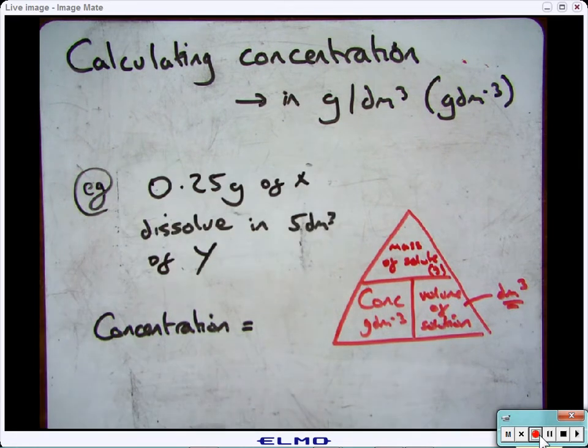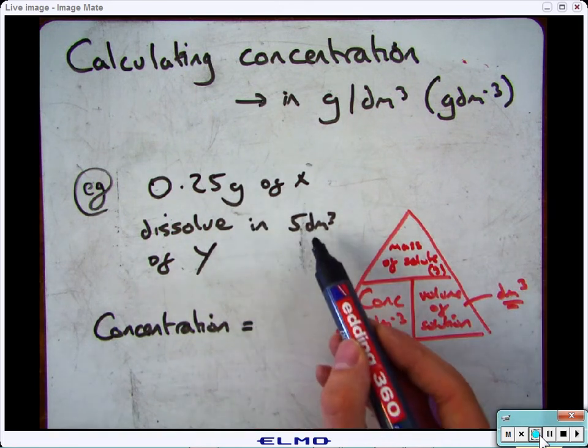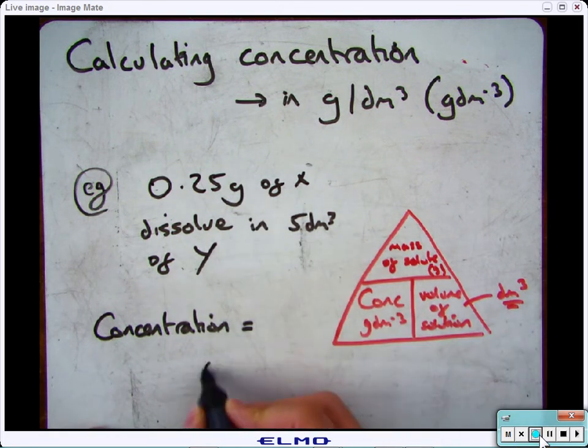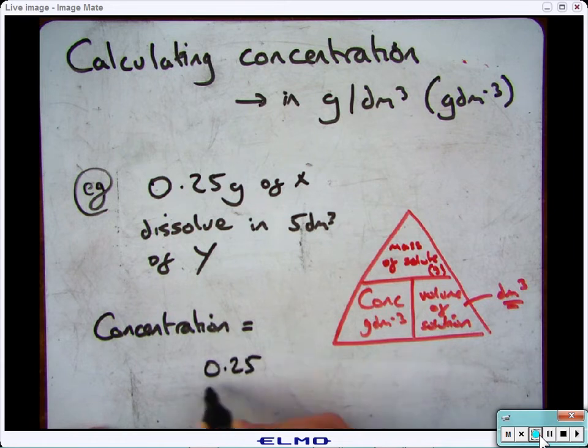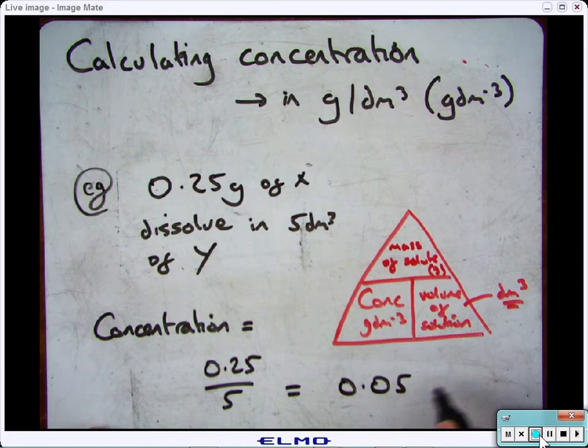Same again here, 0.25 grams of x dissolve into 5 decimetre cubed of y. So it's 0.25 divided by 5, which gives you 0.05 grams per decimetre cubed.